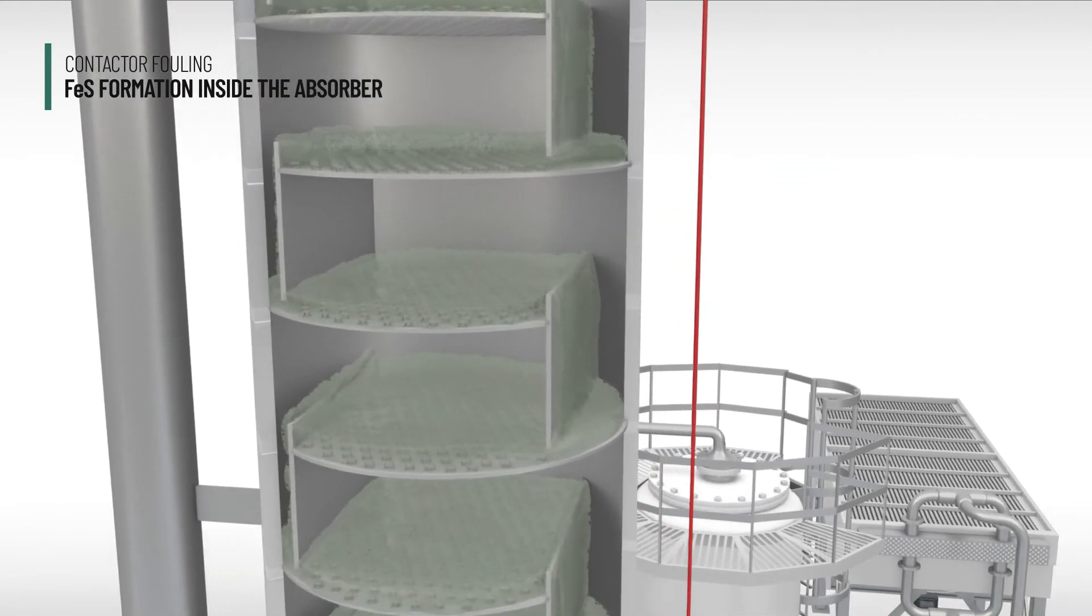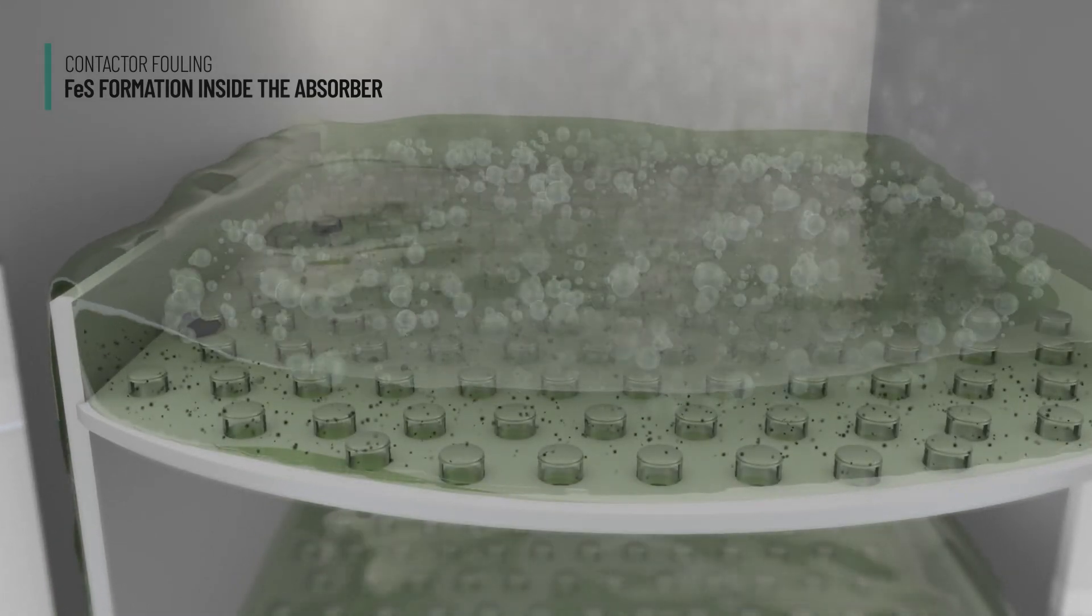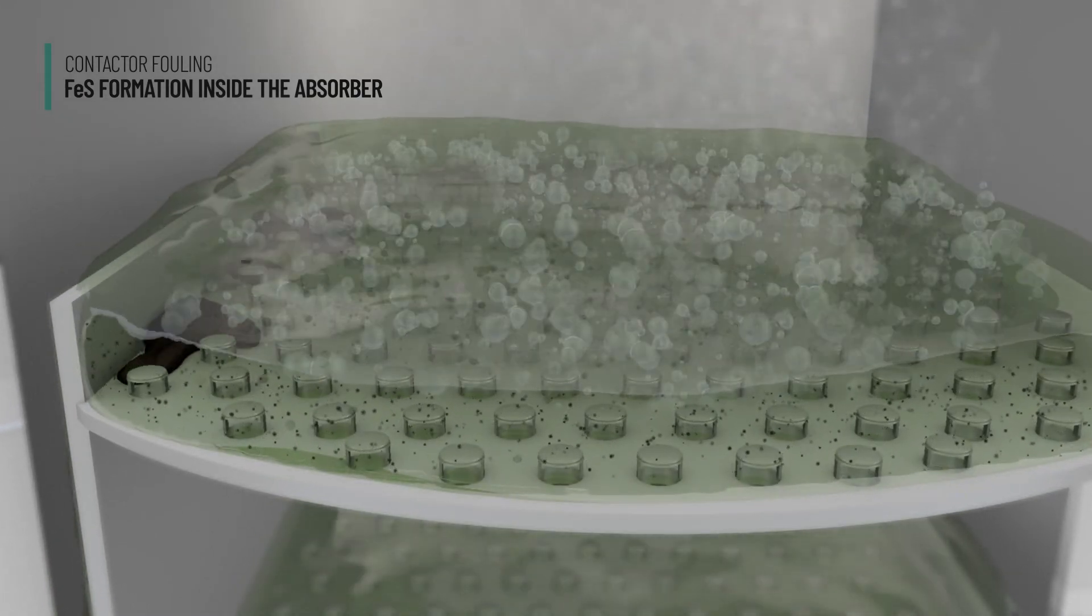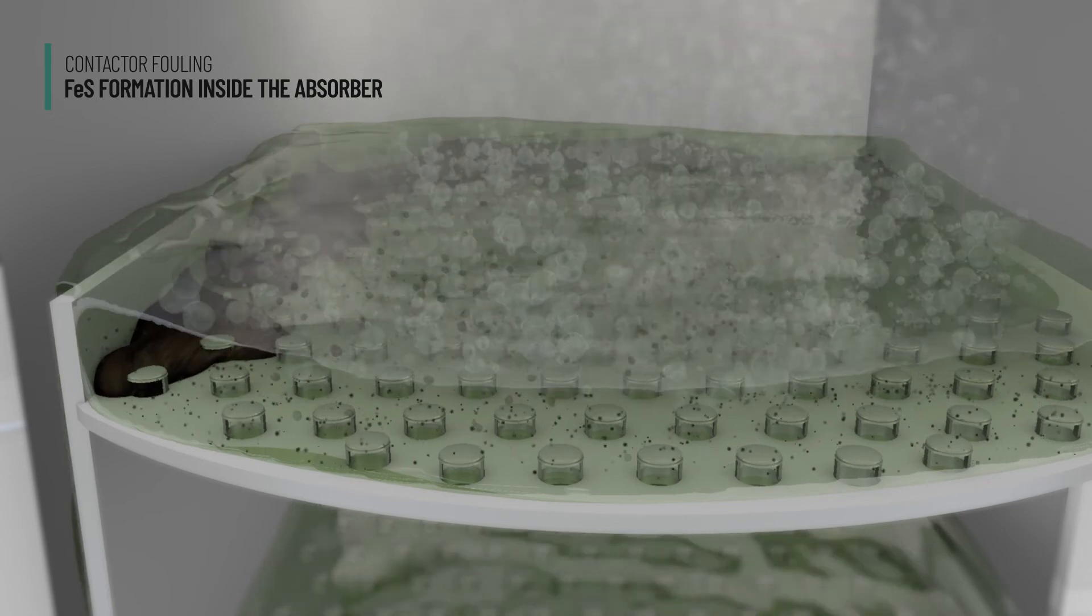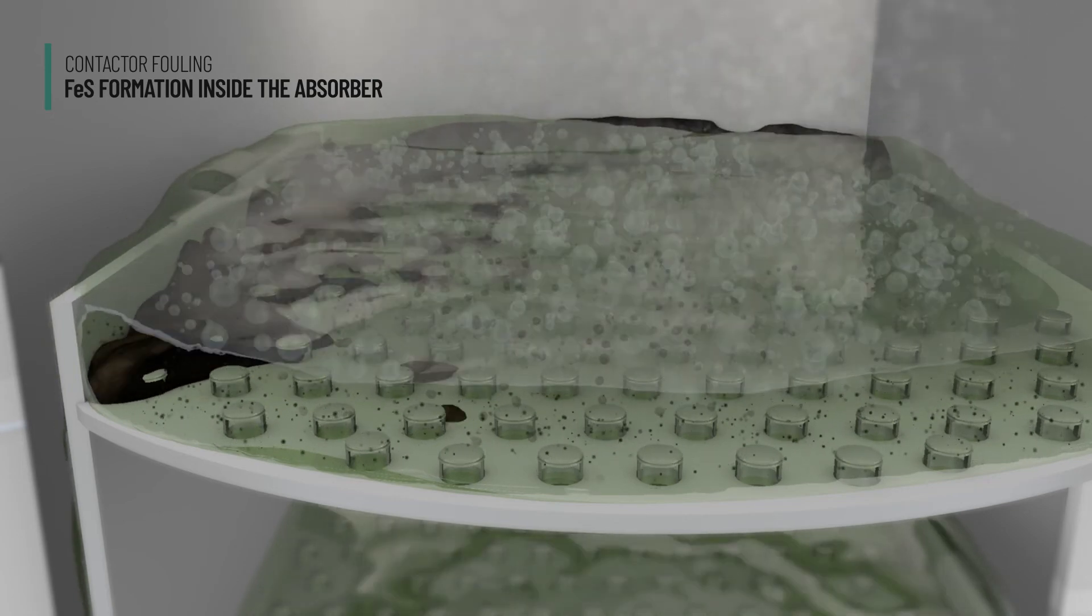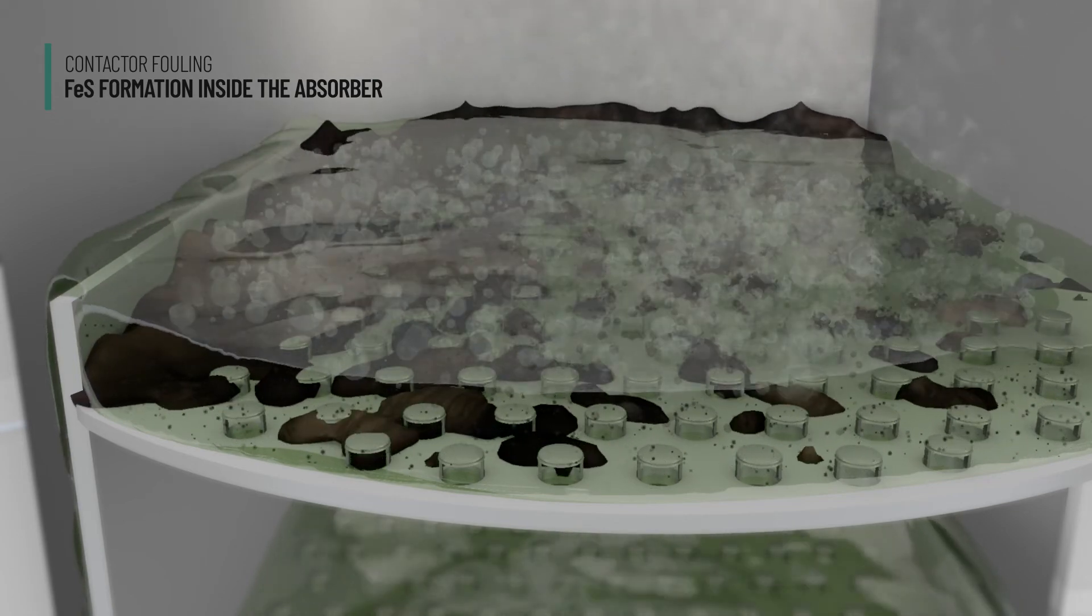Other suspended solids will be attracted to this sludge such as activated carbon particles, coke dust, catalyst fines, and other corrosion products, causing it to grow in size and density.